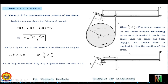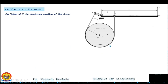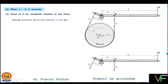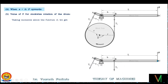Moving ahead with the clockwise rotation of the drum: when the drum rotates clockwise, one side of the band becomes the tight side with tension t1 and the other becomes the slack side with tension t2. This is the free body diagram of the lever with forces P, t1, and t2. Taking moments about fulcrum O: t2 will rotate the lever anticlockwise (positive moment, magnitude t2 × a), P will also rotate anticlockwise (positive moment, magnitude P × l), but t1 will rotate clockwise (negative moment, magnitude t1 × b).